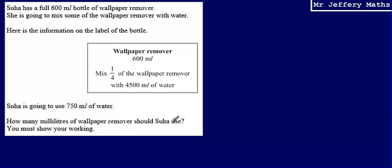The first thing I'm going to do here is look at this information. We're told that we need to mix one quarter of the wallpaper remover with 4,500 milliliters of water. So the first thing I want to work out is what is one quarter of that 600. We can work out a quarter by dividing by 4, and so 600 divided by 4 gives us 150.